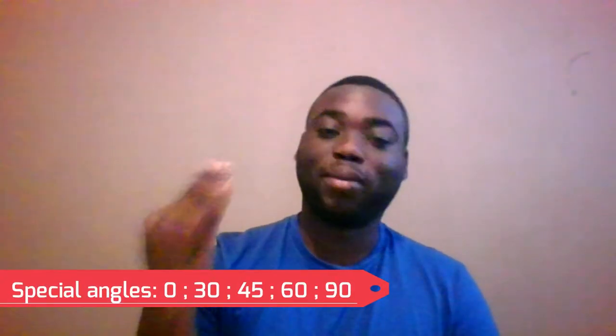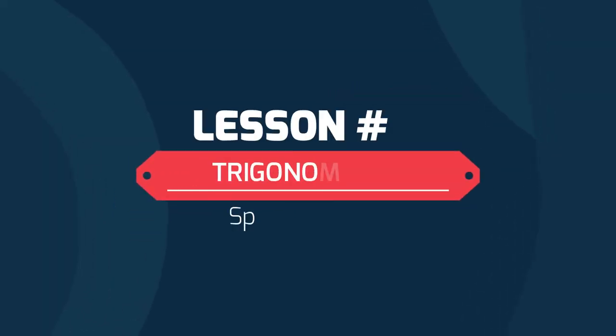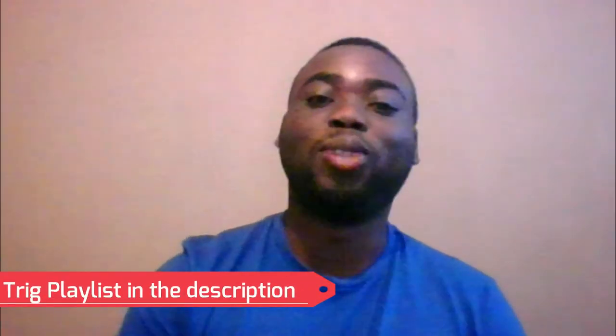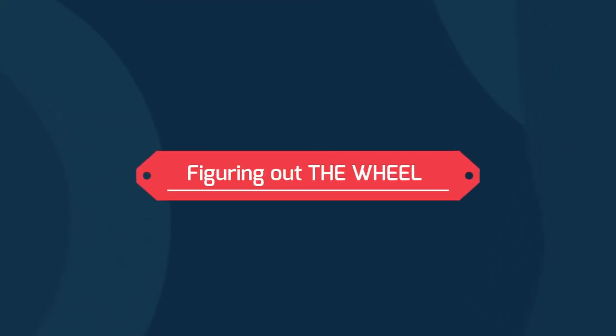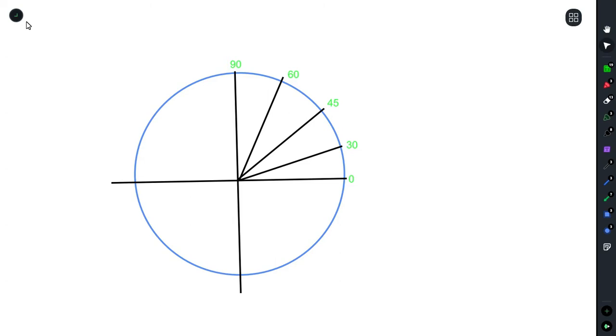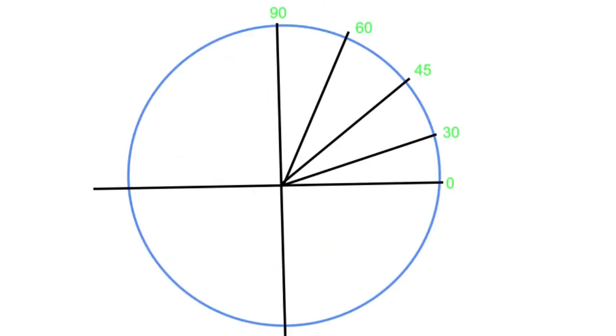There are five important trig values that you need to know — what we call special angles. We have zero, 30, 45, 60, and 90. This video is going to focus on how to remember them. The first way to remember special angles is the wheel. One way to figure out special angles is by using the wheel, which starts from zero and ends at 90.